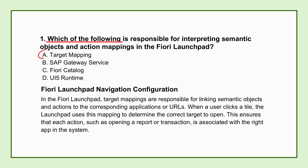The answer is A, target mapping. Target mapping acts like a translator. Inside the Fiori Launchpad configuration, you define target mappings that specify how a user's intent — expressed by clicking something representing a semantic object and an action — gets connected to a technical target, meaning the actual app. It could be a specific Fiori app, a transaction, or even just a URL. So when you click a tile, it's the target mapping that figures out where you actually need to go. It bridges the gap between the user-friendly label and the underlying technical component.